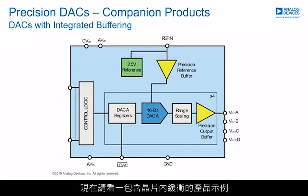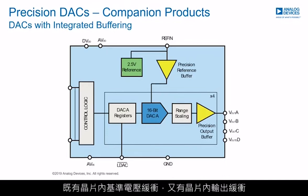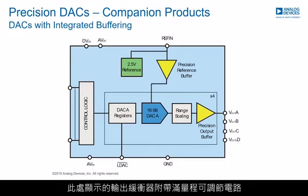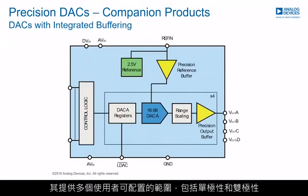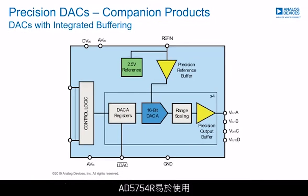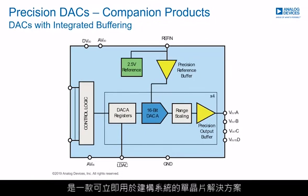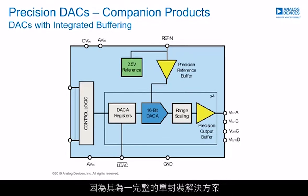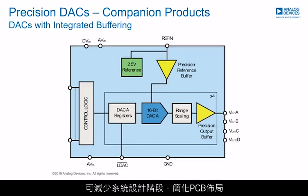We will now look at an example of a product that includes on-chip buffering. This is the block diagram for the AD5754R family of quad-channel DACs, which features both on-chip reference buffering and on-chip output buffering. The internal 2.5V reference is buffered on-chip, so no external buffering is needed. The output buffer is accompanied by range scaling circuitry providing user-configurable unipolar and bipolar ranges. Designed for ease of use, the AD5754R is a system-ready single-chip solution that eliminates external buffering and gain components, providing predictable and specified accuracy, reducing system design time, and simplifying PCB layout.